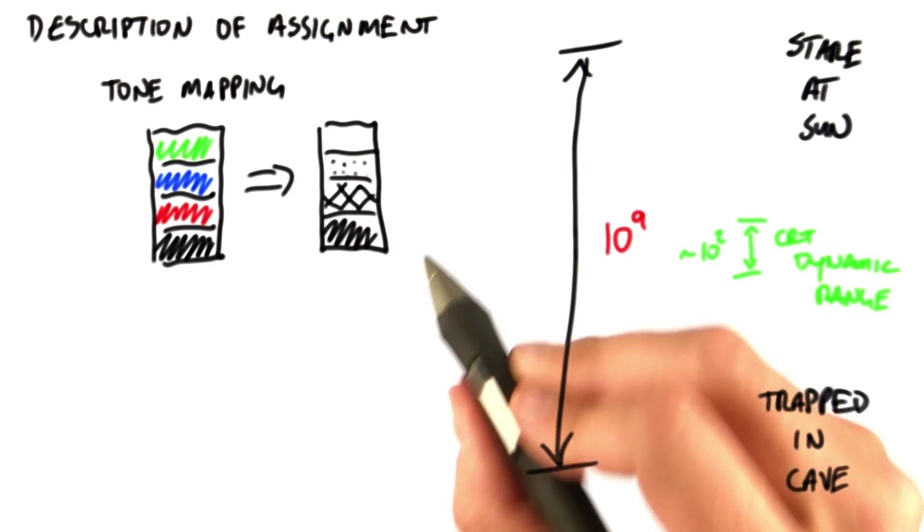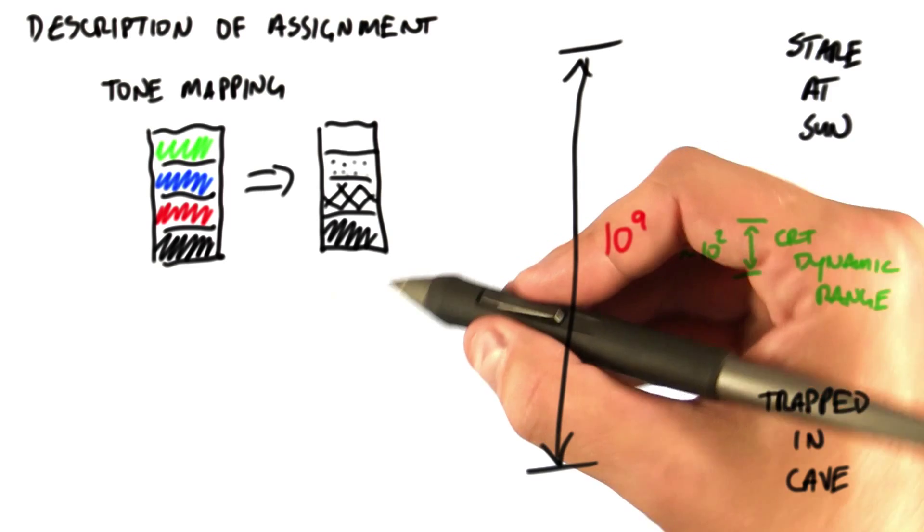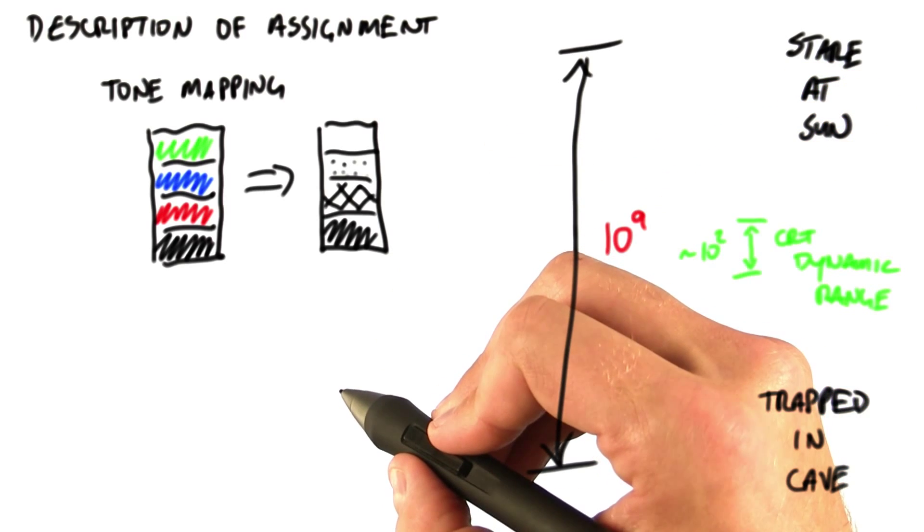So how do we do this mapping? If we do a bad job, then we'll have images that are either too washed out, overly bright, or instead, overly dark.